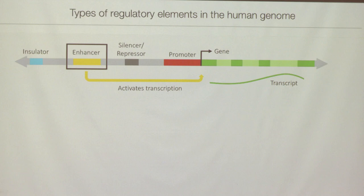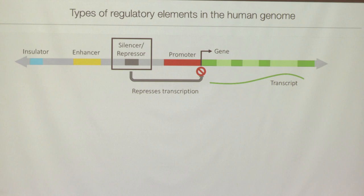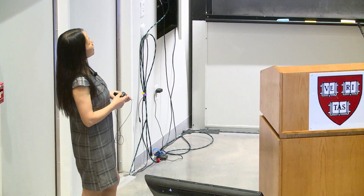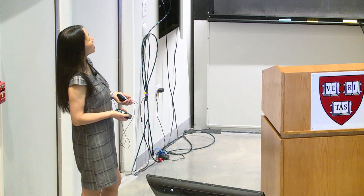Additional types include silencers and repressors, which do pretty much the opposite of enhancers — they repress transcription. There is also another very important class: because our genome is like a very long linear molecule, all these regulatory elements need to be demarcated so that they don't talk to inappropriate genes. Insulators precisely convey this function — they block interactions between enhancers and inappropriate genes, and between silencers and inappropriate genes.